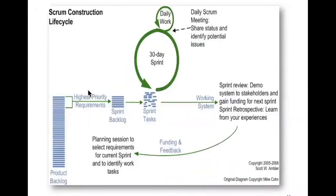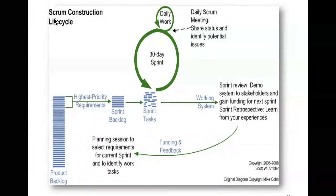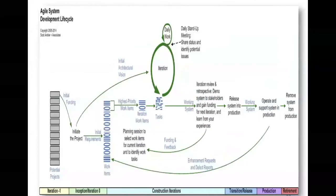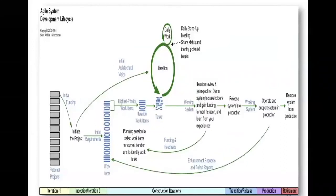This next diagram tells the same story but is specifically related to the Scrum instantiation of the agile approach. Comparing it to the previous one, they're telling the same story really — I just included it for completeness. I'm going to pause now in case anybody has any questions, either related to this or something I haven't mentioned at the very beginning of the module. Feel free to comment.